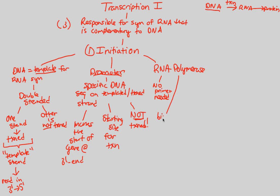RNA polymerase's function is multifaceted: it binds to the promoter, unwinds the helix, and begins transcription. It unwinds the helix because only one strand is necessary as the template — you don't want to get mixed up with the other strand. After unwinding, RNA polymerase begins transcription.